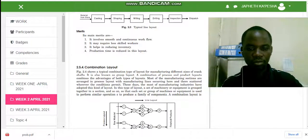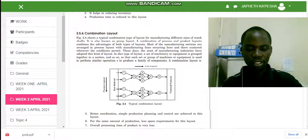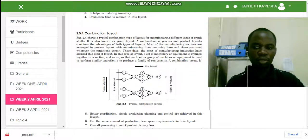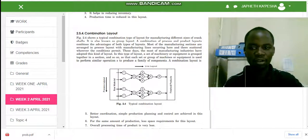They are grouped together in sections like 1-1, 2-2, 3-3, 4-4, 5-5. This figure shows a group of machineries and equipment so that each set or group is used to perform similar operations to produce a family of components. A combinational layout is shown here in Figure 2.4, whereby the raw material comes from one end, then we have different sets of lines.